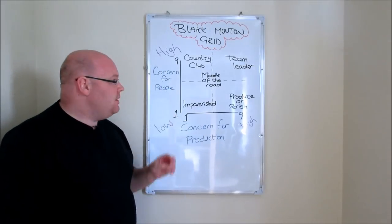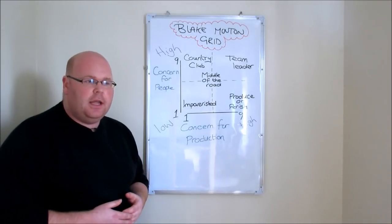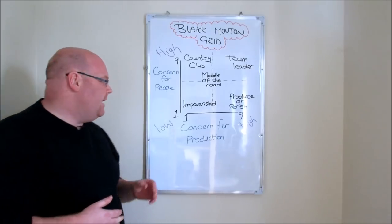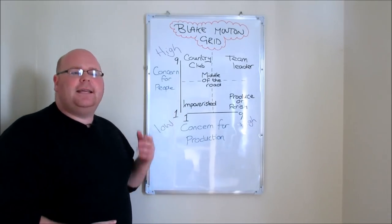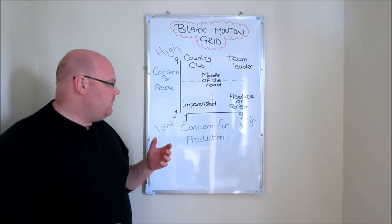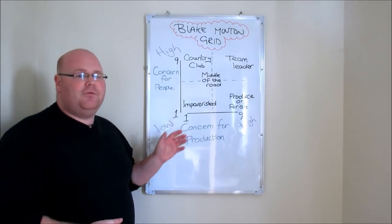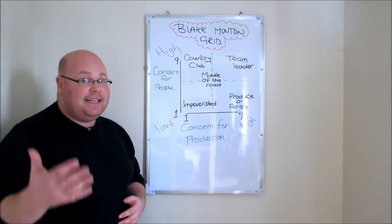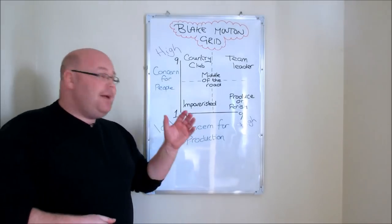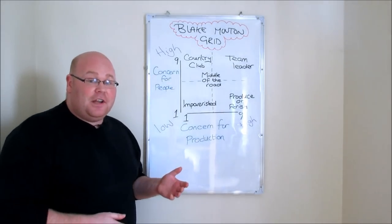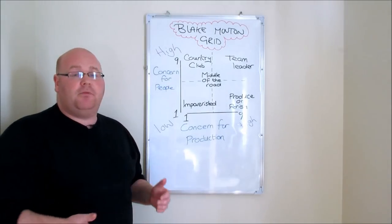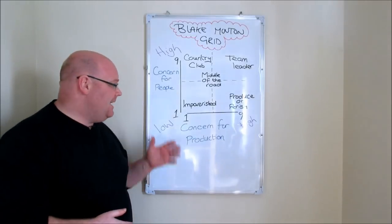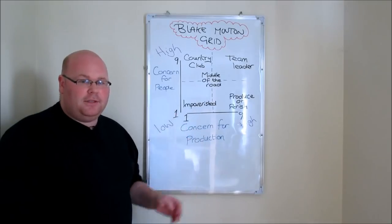Understanding the axes helps us understand the five different types of manager that Blake and Mouton identified. Starting in the bottom left-hand corner, we have what they referred to as the impoverished leader. These were people who had scant regard for production — productivity, efficiency, completing deadlines — and matched that with very little regard for the people in their team. They didn't prioritize the welfare of their staff or the needs of the people in their team, scoring lowly on both scales.